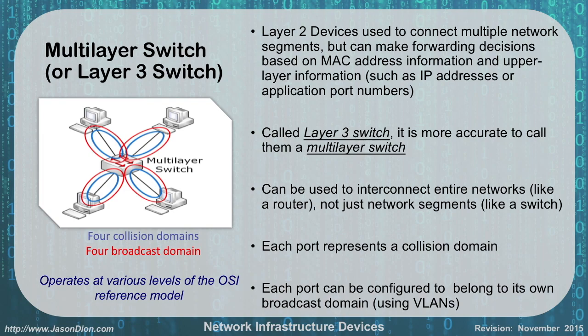Another kind of switch is a multi-layer switch, or layer 3 switch. It is a layer 2 device that can connect multiple network segments together and make forwarding decisions based on not just MAC addresses, but also IP addresses and port numbers — so it can act like a router. It is also called a multi-layer switch, which is more accurate. It can interconnect entire networks like a router, not just network segments. Each port is its own collision domain and its own broadcast domain, and each port can be configured to belong to its own broadcast domain using VLANs. It operates at layers 2, 3, and even layer 4.